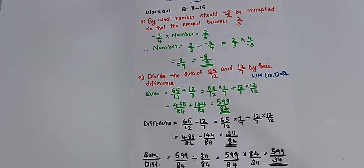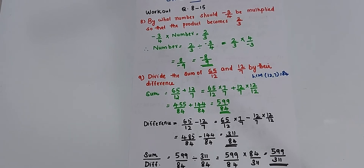Now you have the sum and the difference. Divide 599 by 84 divided by 311 by 84, which equals 599 by 84 into 84 by 311. The 84s cancel, so the answer is 599 by 311.